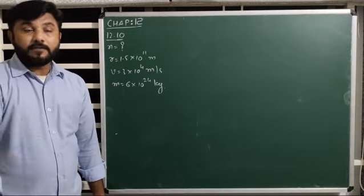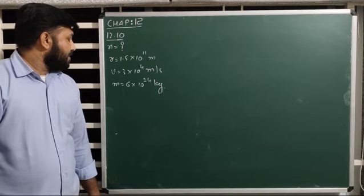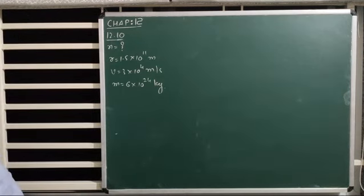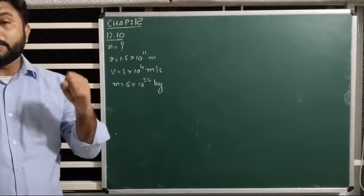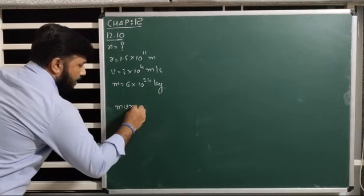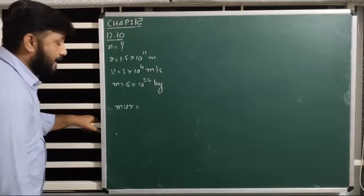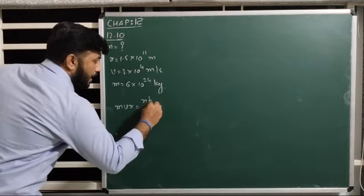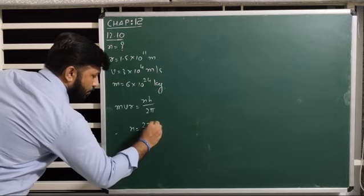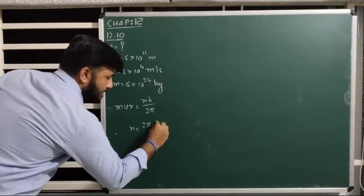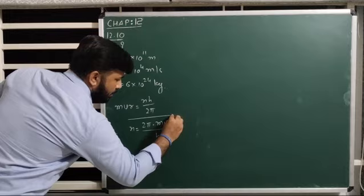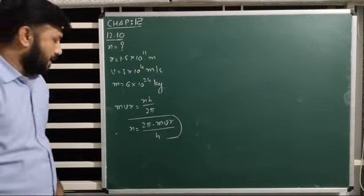Which equation will we use? Think of that — m is given, v is given, r is given, and you have to find n. Here, we have to use Bohr's postulate number 2. What was there? mvr, that is orbital angular momentum, is an integral multiple of h upon 2 pi. So making n the subject, n is equal to 2 pi multiplied by mvr upon h.